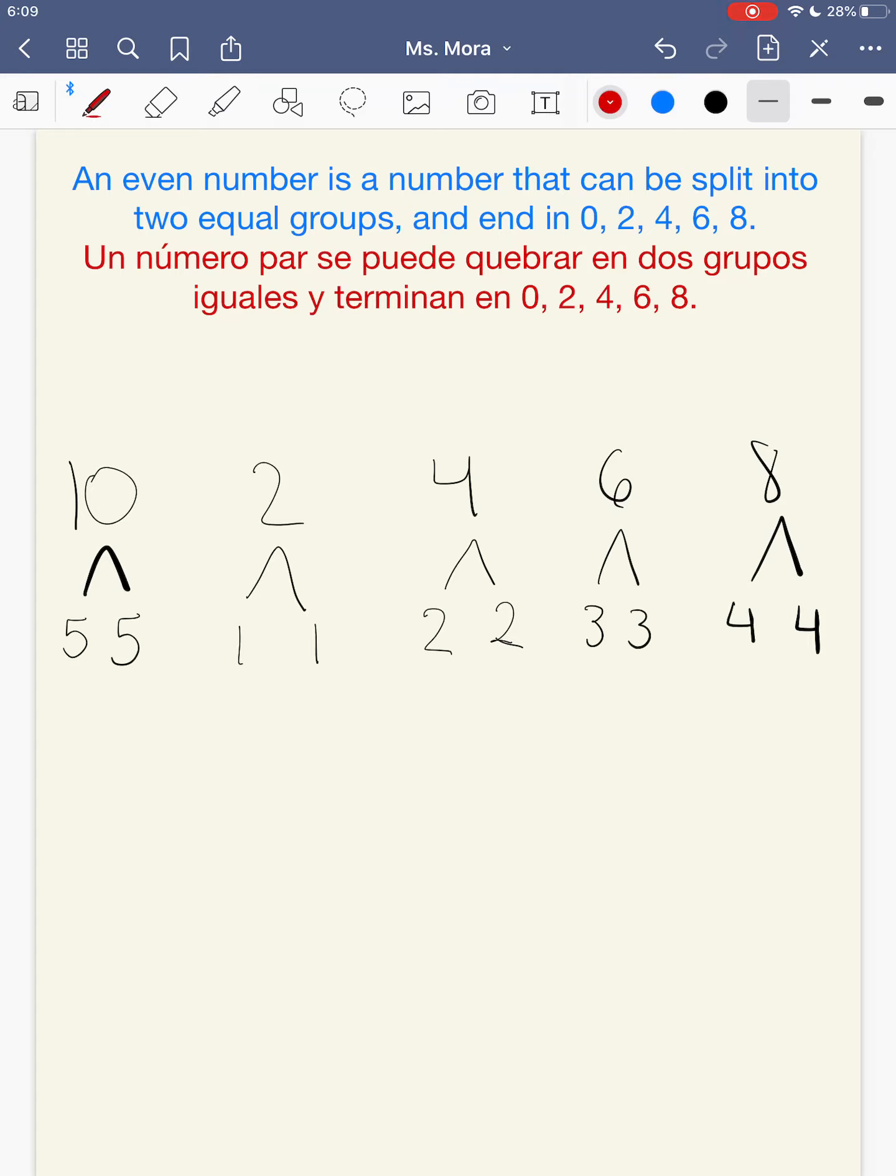But what happens to the other numbers? In between 0 and 2 is 1. Well, 1, I add 0 and 1 to get 1. And these are not equal groups, so 1 is not even. 1 is called odd. Numbers that are not even are called odd. Los números que no son par se llaman impar en español, porque no tienen grupos iguales.